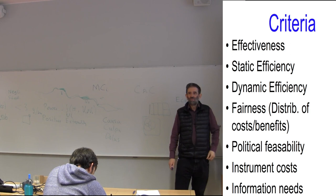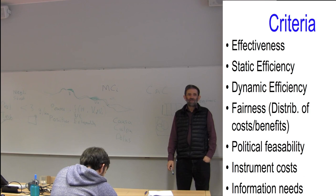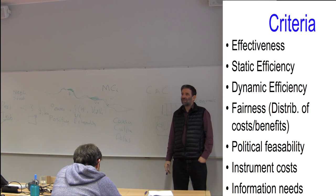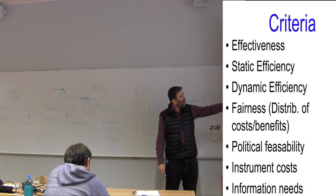Dynamic efficiency relates to what we discussed in the last course — how we use resources over time. The criterion is that scarcity rises at the rate of interest over time. That is the Hotelling rule.